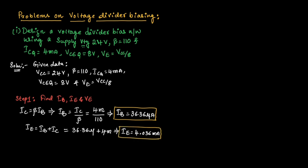Now we need to find the value of VE. VE can be given as VCC divided by 8, which is 24 divided by 8. So VE is equal to 3 volts.